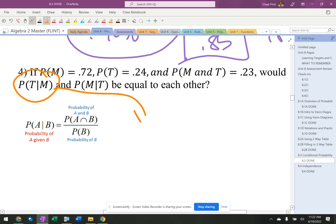If I do this one, that means the probability of M is on the bottom, which is 0.72, and then the and goes on top, 0.23.